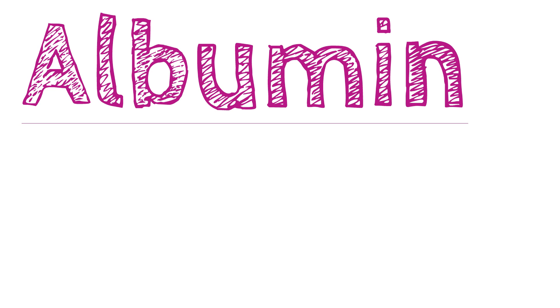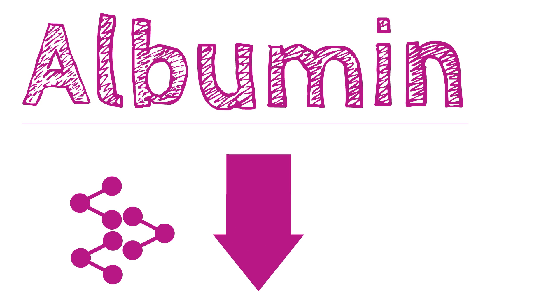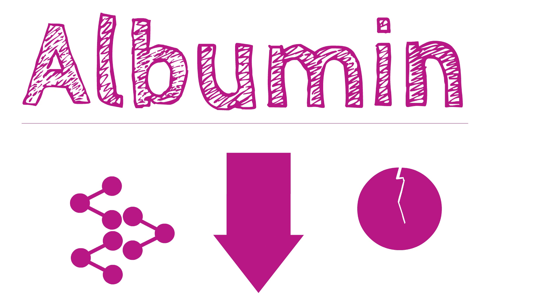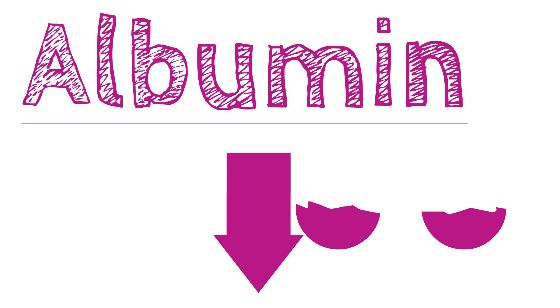Albumin is the main protein made by the liver. Levels of albumin decrease with liver disruption. It is not a useful marker in the acute stages of disease because it has a half-life of 20 days.